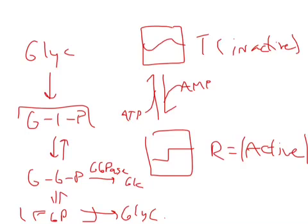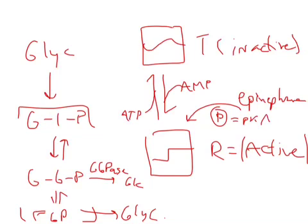Now, of course, epinephrine can also favor the R state. And that's through a phosphorylation through PKA, which we'll talk about in a later video.